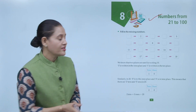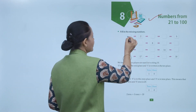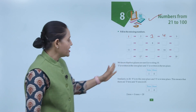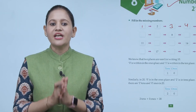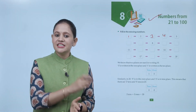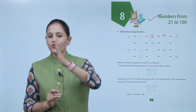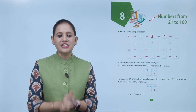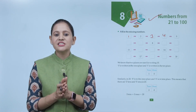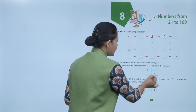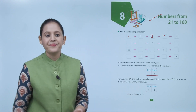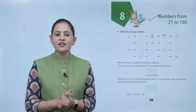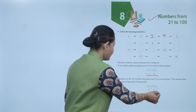Fill the missing number — here you can see forward counting: 1, 2, 3, 4, 5, 6, 7, 8, 9, 10. We have to write numbers up to 20. We know that two places are used for writing numbers from 10 onwards. Before 10, single digit numbers use only one place. From 10, we use two places — ones place and tens place. In 10, 0 is at the ones place and 1 is at the tens place. Similarly, in 20, 0 is at the ones place and 2 is at the tens place.